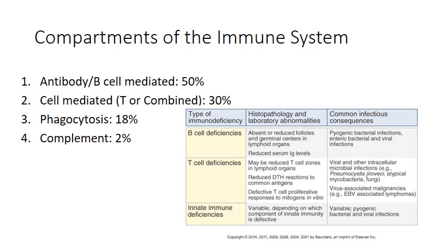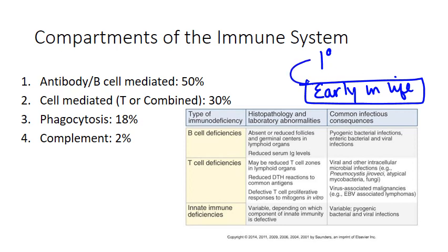Primary immunodeficiency disorders are really serious and life-threatening conditions, and they all have a genetic basis. That's what makes them primary as opposed to acquired. They almost always present very, very early in life. Babies are constantly putting things in their mouths, have no immune response to protect them, and are constantly being passed from person to person. That's a lot of opportunities for a very new baby to get sick. So if they do have a primary immunodeficiency, you're going to start to notice these children getting ill pretty early. They can be diagnosed anytime from the first day of life to a few months or even a few years of age.